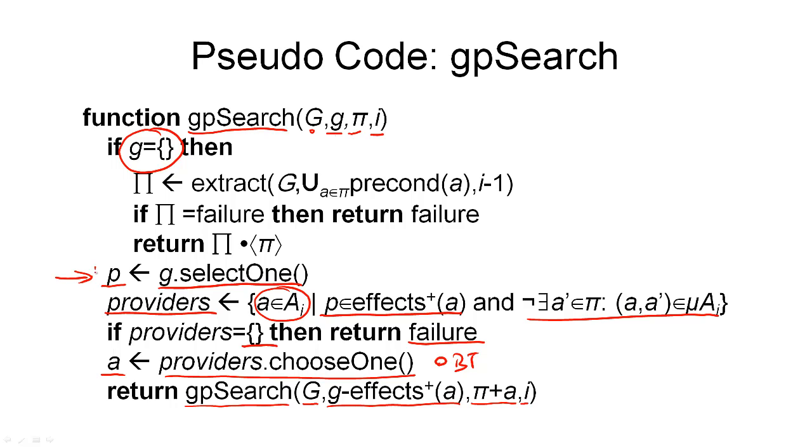That means every time we go through this part of the algorithm, we reduce the set G. And eventually, we will come to the point where this set G is empty. We have no more sub-goals to satisfy in this layer. And we have chosen some actions accumulated in the variable pi.